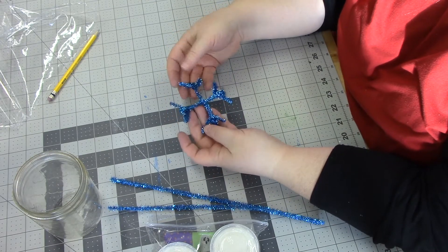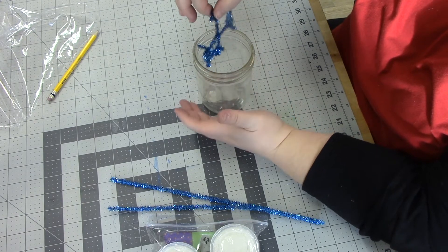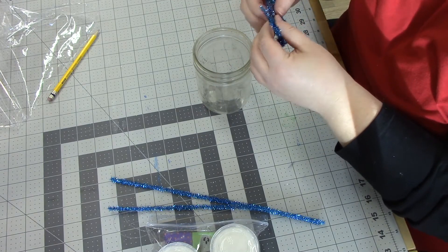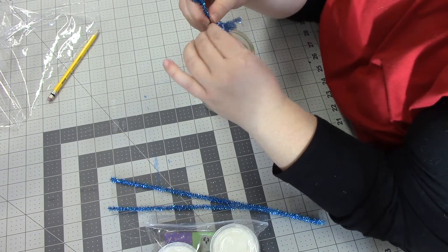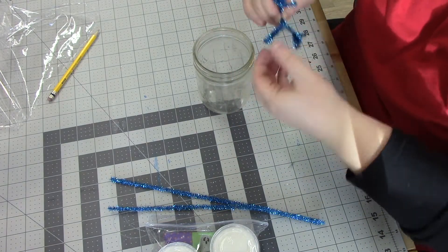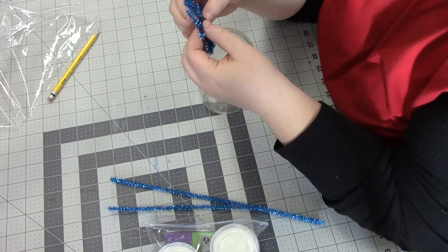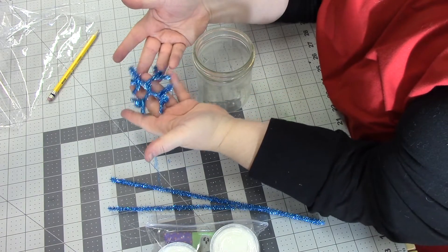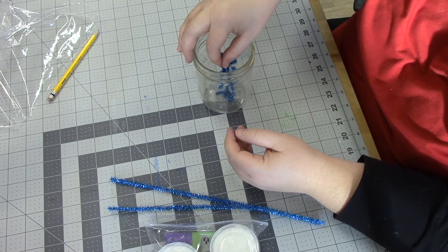Okay, so I've got kind of my snowflake shape and I want to make sure that it's going to fit in the jar. It looks like it's going to be a little bit too big, so I'm just going to twist these so that'll end up making them a little bit shorter. So I'm just going to twist these up a little bit. Okay, so that's the shape I'm going to go with and it should now fit in the jar.